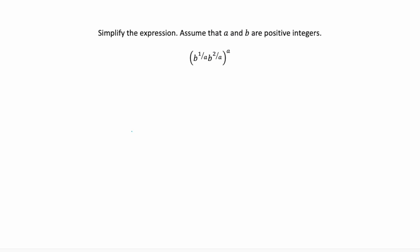Well, first let's start inside the parentheses. Since they both have the same base, b, we can use the product rule which tells us to keep the base, b, and add those exponents, which is 1 over a plus 2 over a, and then that's still going to be raised to the power of a.